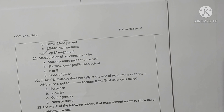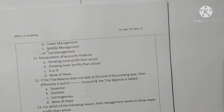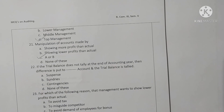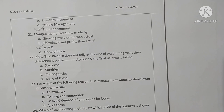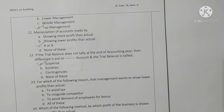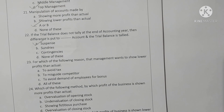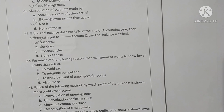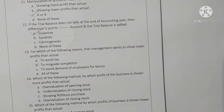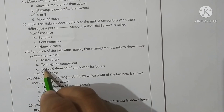Question 21: Manipulation of accounts is made by showing more profit than actual or showing lower profit than actual — option C (A or B) is correct. Question 22: If the trial balance does not tally at the end of the accounting year, the difference is put into a suspense account so the trial balance tallies — option A is correct. Question 23: Management wants to show lower profit than actual to avoid tax, to misguide competitors, or to avoid employee bonus demands — all of these, option D is correct.